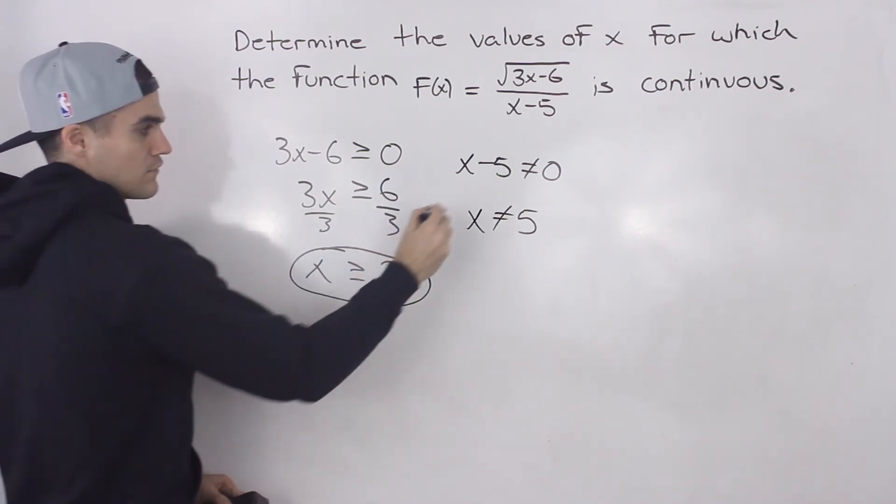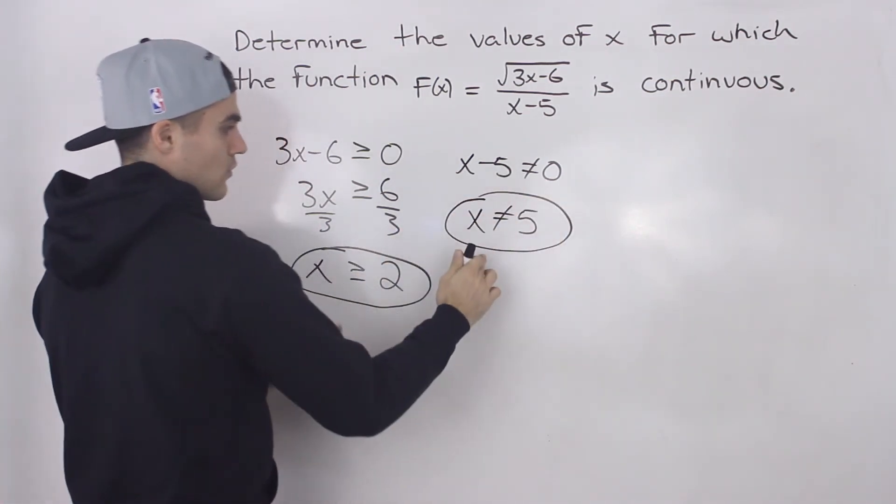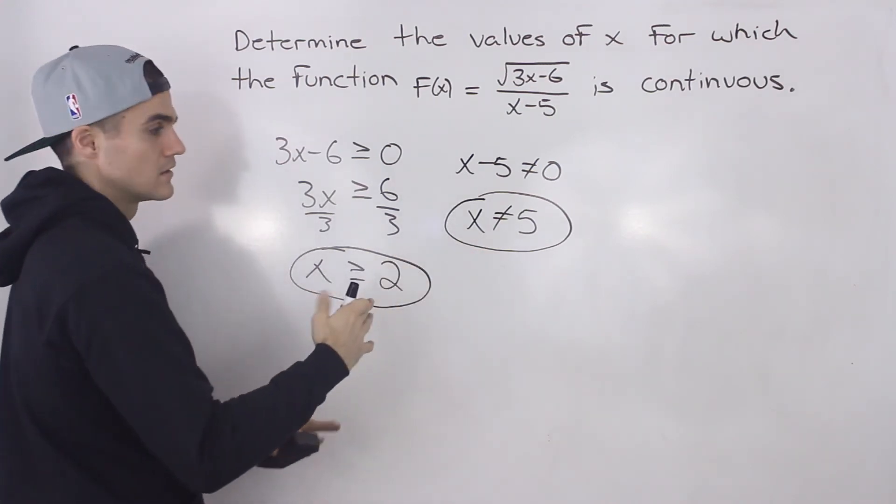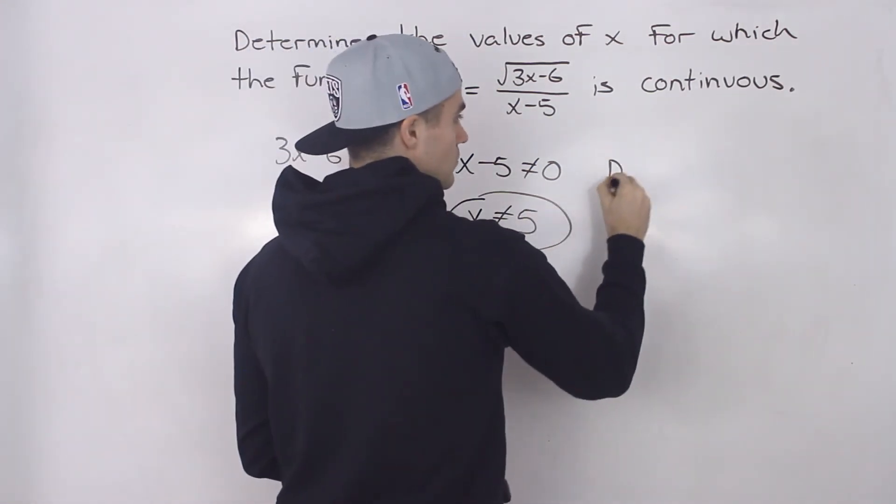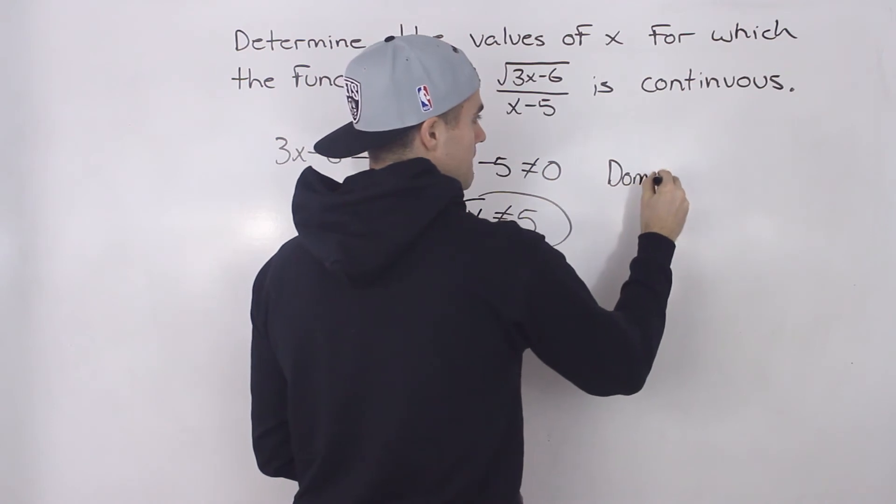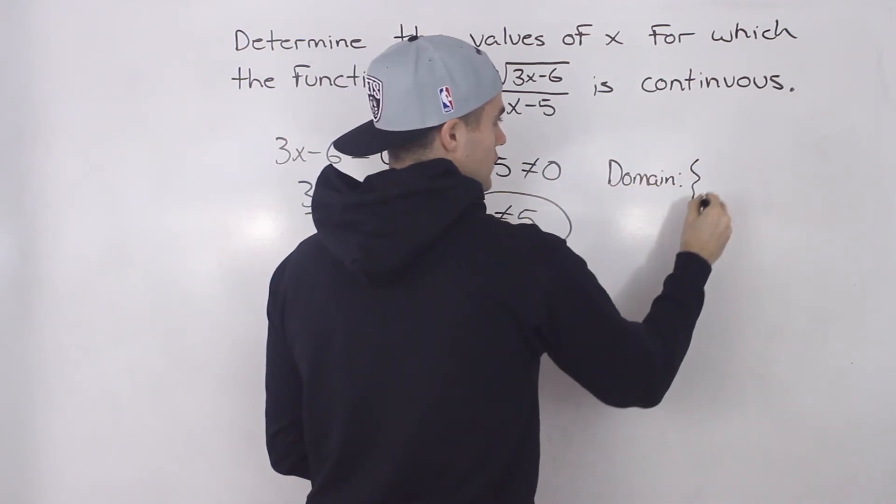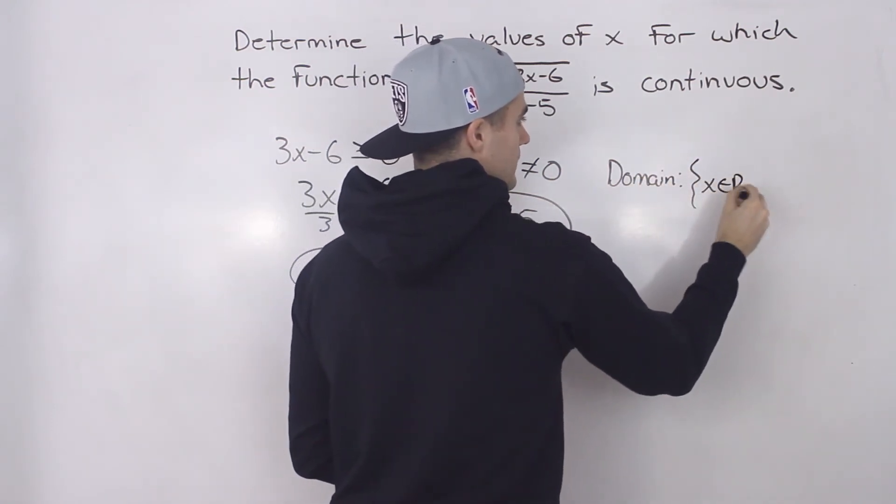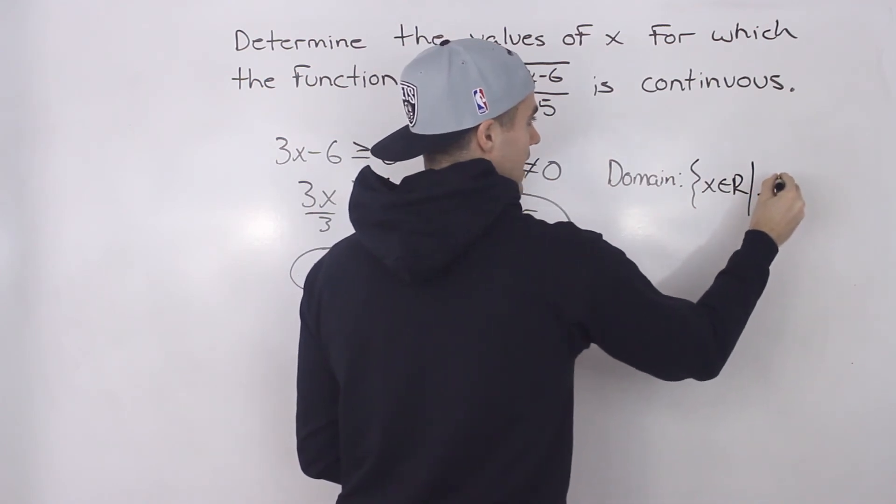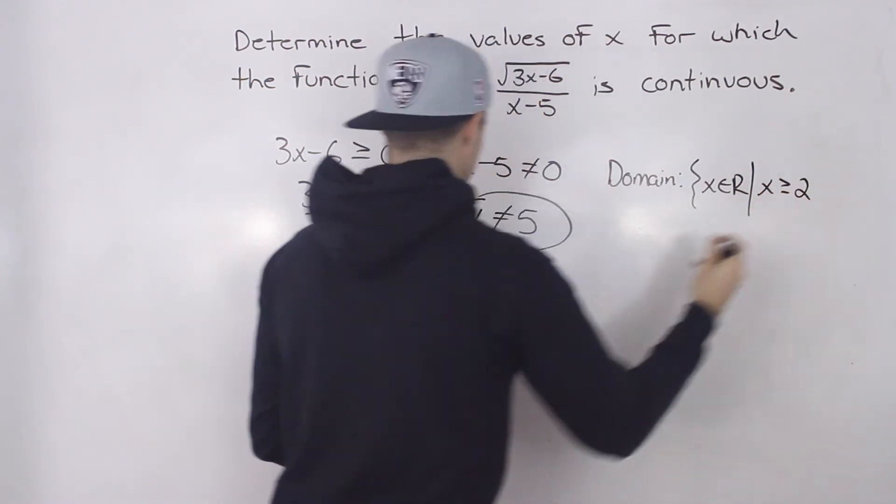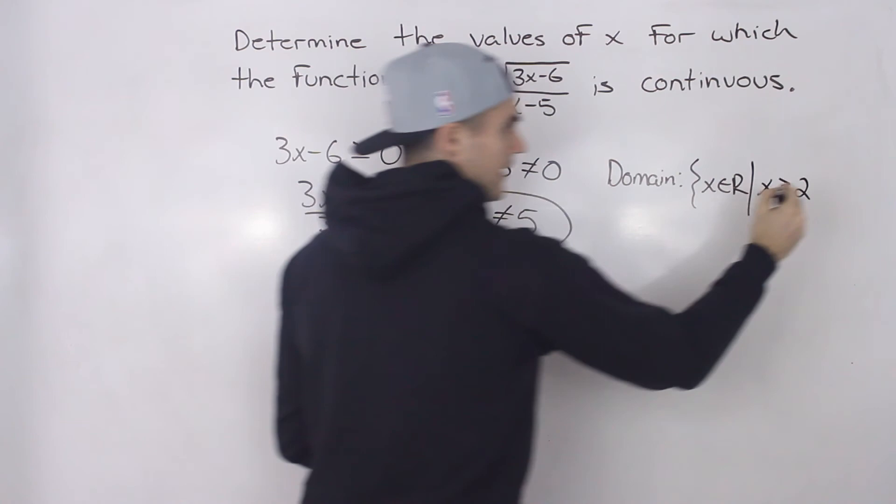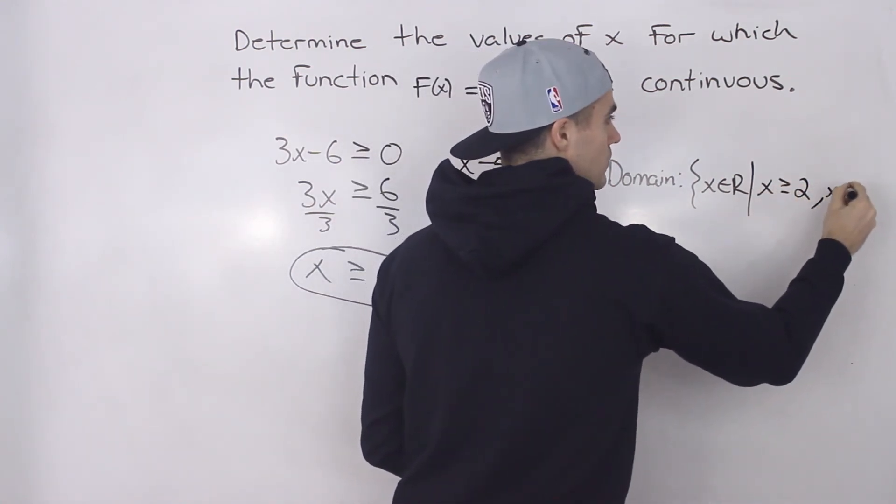Hence, the function is continuous for both of these conditions combined. So basically the domain of this function is x where x is greater than or equal to 2 and x does not equal 5.